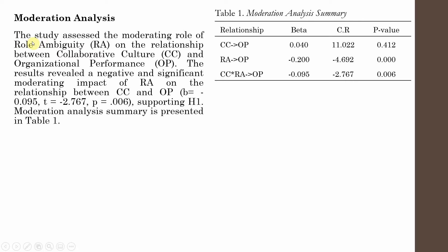The first thing: the study assessed the moderating role of role ambiguity — that is your moderator — on the relationship between collaborative culture, which is your IV, and organizational performance, which is your DV. So, what was the result of your moderation analysis?